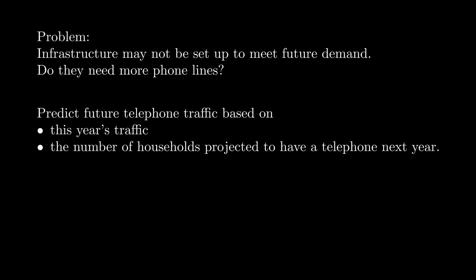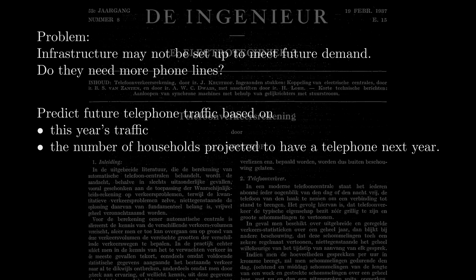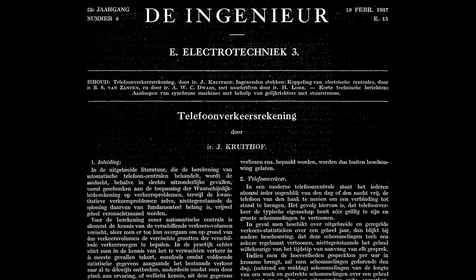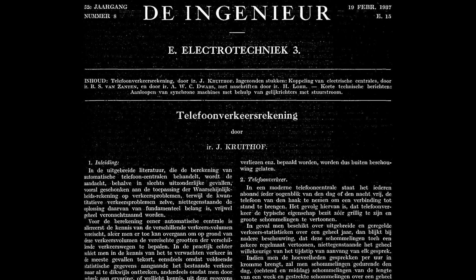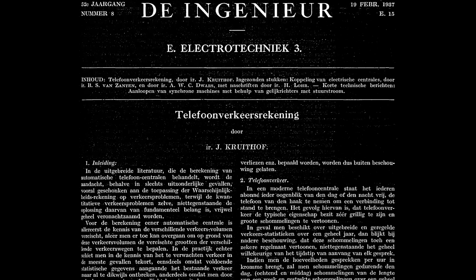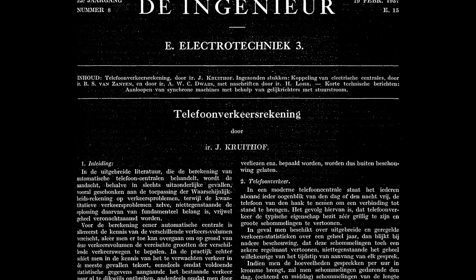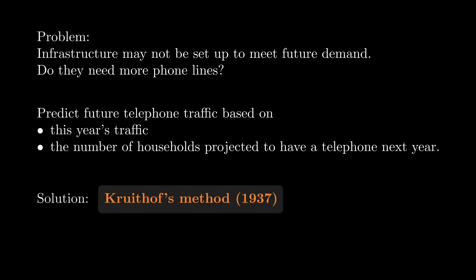Several methods had been proposed to do this under certain conditions. But in 1937, a Dutch engineer named Krauthoff writes a paper tearing them all apart and pointing out ways that their assumptions are either absurd, self-contradictory, or meaningless. Krauthoff then proposes a better method. And it's great. But what Krauthoff doesn't realize is that the numbers it produces are extremely complicated. Mathematically, these numbers won't be understood for a long time. And even now, we don't have a complete picture. To understand Krauthoff's method, let's work through the example in Krauthoff's paper.